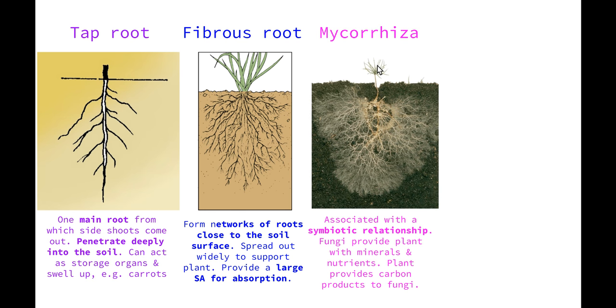Next we have mycorrhiza, which are associated with a symbiotic relationship. You'll recall back in the local ecosystem topic, we looked at symbiosis where organisms live in unison with each other. In this case, the fungi provides the plant with minerals and nutrients and the plant provides carbon products to the fungi, usually in the form of carbon dioxide. It's a mutual relationship where they both help each other out.